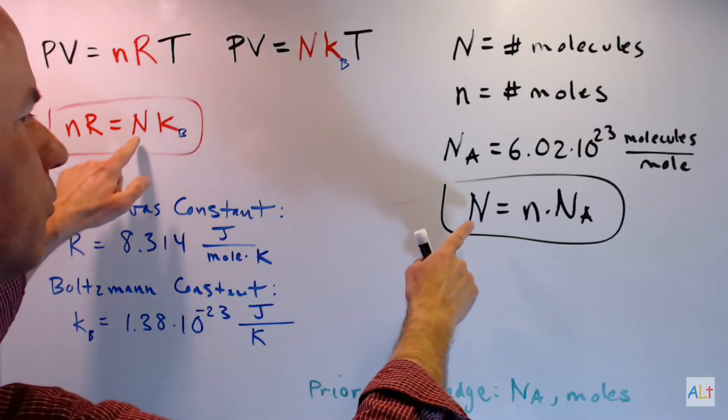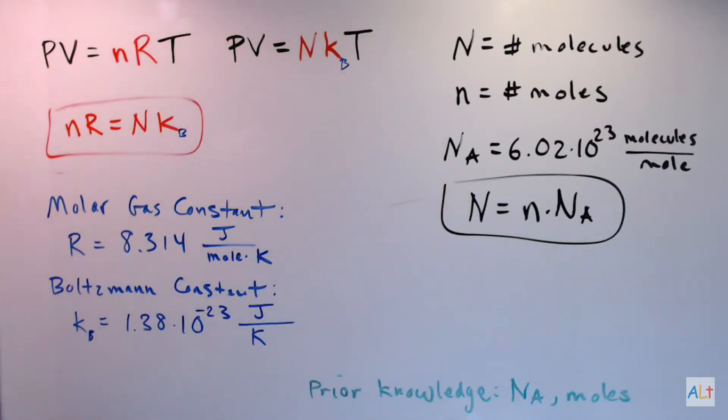Now you can combine these two formulas, substitute for the N, do a little algebra and then you'll get this. And I think you can see that if you multiply the Boltzmann constant times Avogadro's number, you will in fact get the molar gas constant.